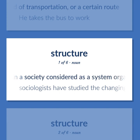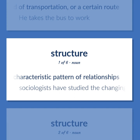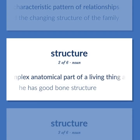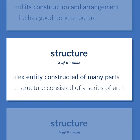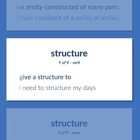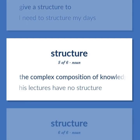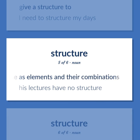Structure: The people in a society considered as a system organized by a characteristic pattern of relationships — e.g., sociologists have studied the changing structure of the family. A particular complex anatomical part of a living thing and its construction and arrangement — e.g., he has good bone structure. A thing constructed, a complex entity constructed of many parts — e.g., the structure consisted of a series of arches. To give a structure to — e.g., I need to structure my days. The complex composition of knowledge as elements and their combinations — e.g., his lectures have no structure.